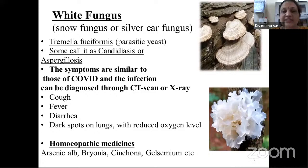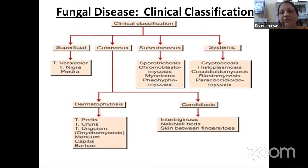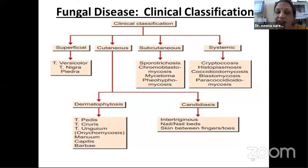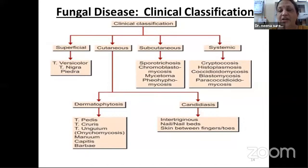Regarding fungal disease classification: based on site of affection, the basic classification includes superficial (tinea versicolor, tinea nigra, piedra, etc.), cutaneous (subdivided into dermatophytosis, candidiasis, etc.), subcutaneous, and systemic. The detail is available in literature. Today's lecture is not a detailed session on this — my topic is homeopathic materia medica — but I'm giving a guideline of fungal disease and related medicines.